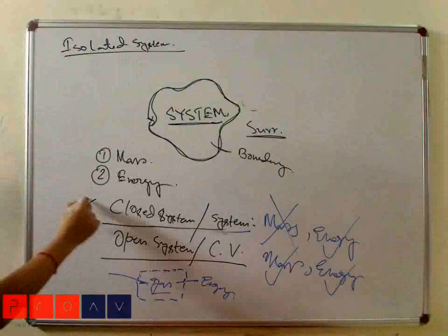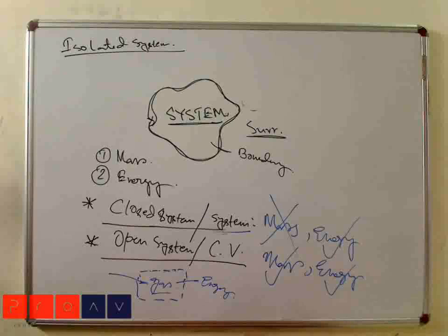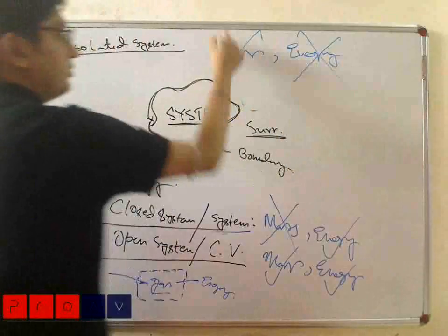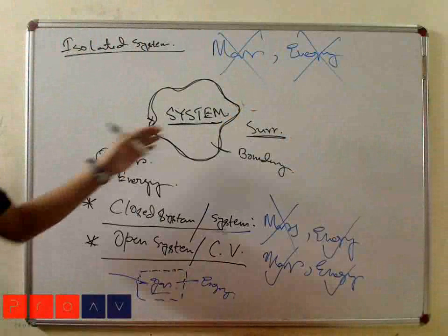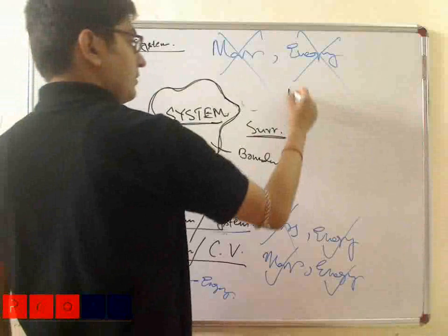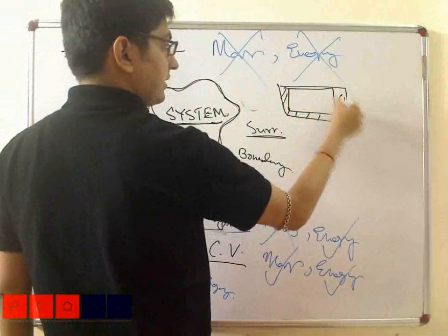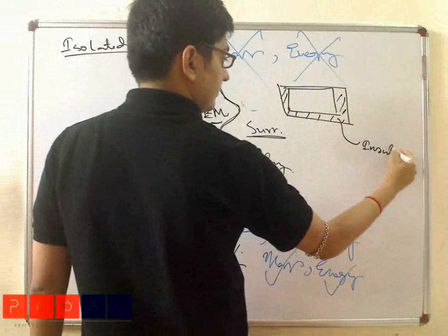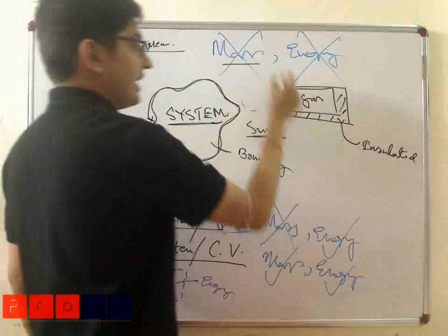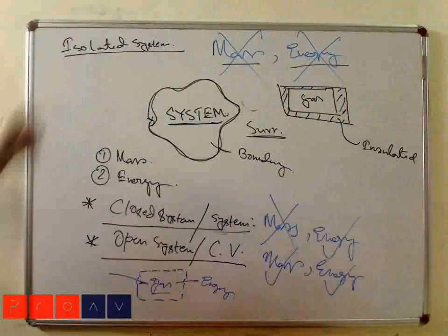An isolated system means it has no interaction with the surroundings by any means. In an isolated system, both mass and energy cannot transfer from system to surroundings or surroundings to system. For example, an insulated chamber with some gas — neither the surrounding gas nor energy can come into this gas. So this is the isolated system.